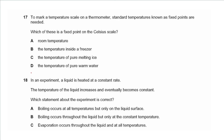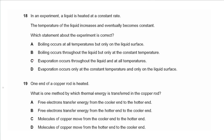Question 17 is about thermometers — you can skip this for the new syllabus. It asks which is a fixed point on the Celsius scale. Room temperature — no. The temperature inside a freezer — no. The temperature of pure melting ice — yes, that is zero degrees Celsius. Pure boiling water is the other fixed point, not warm water. So the answer is C.